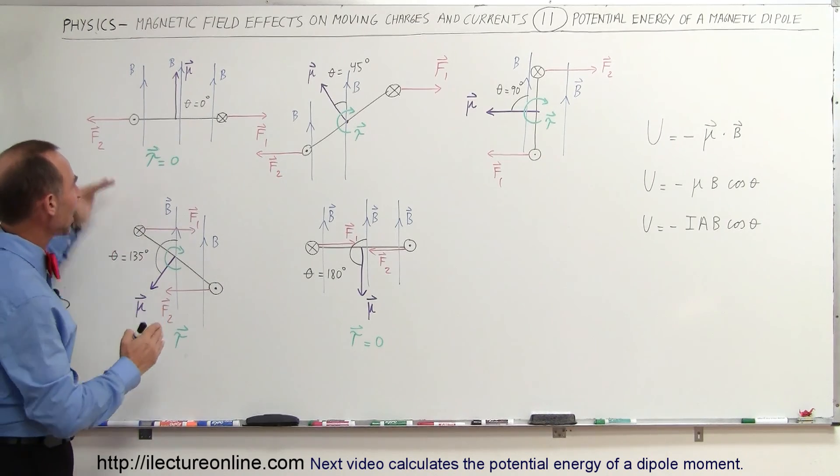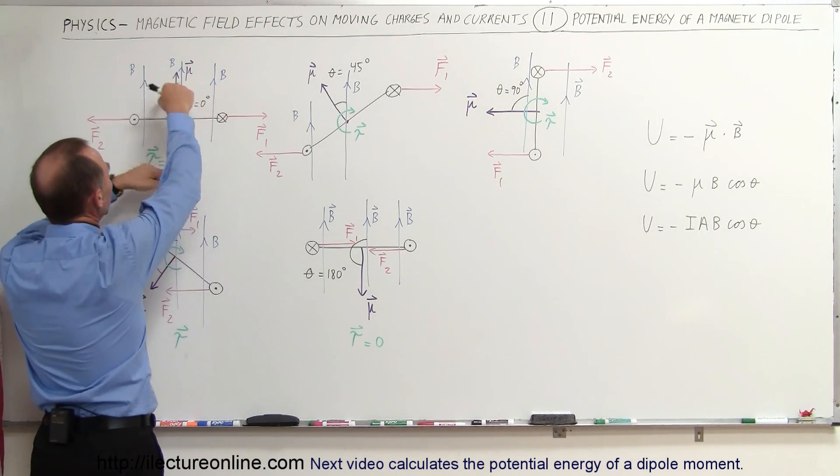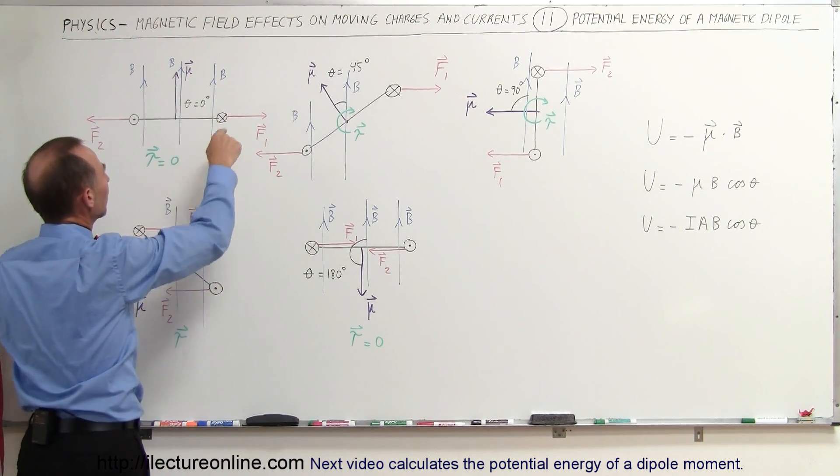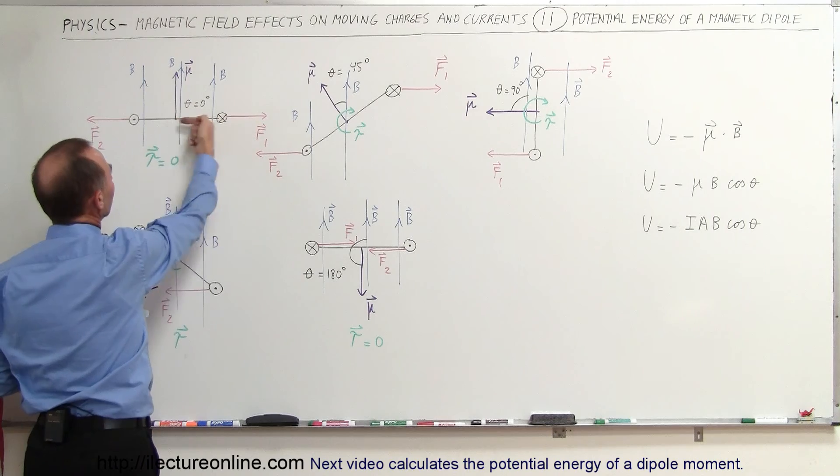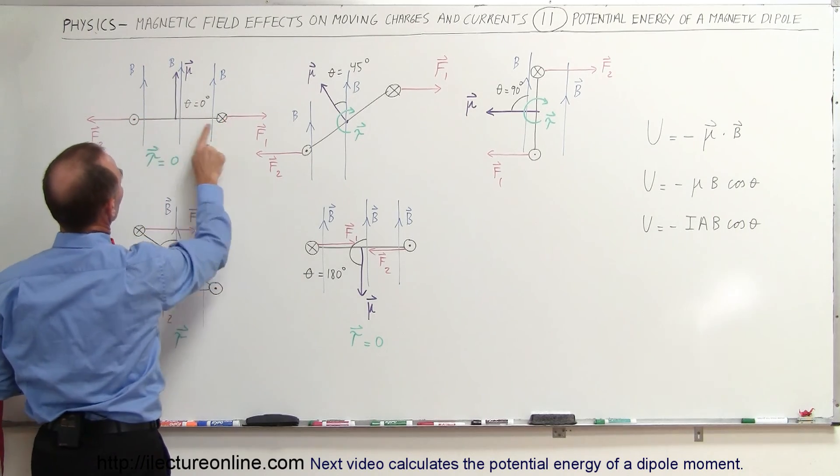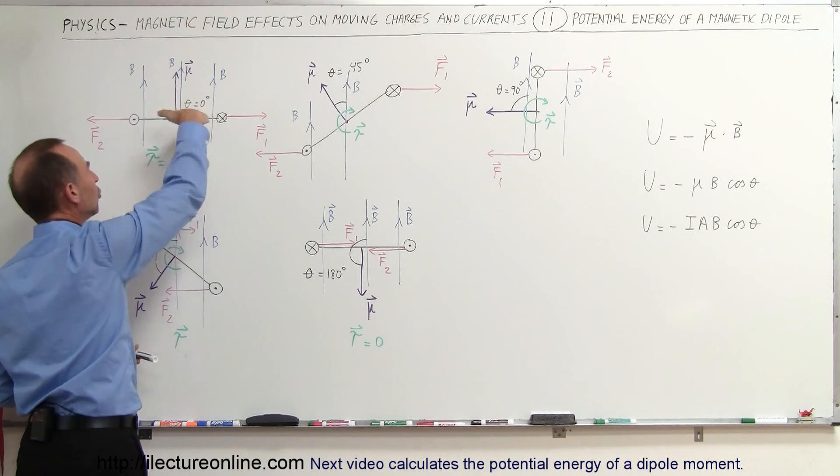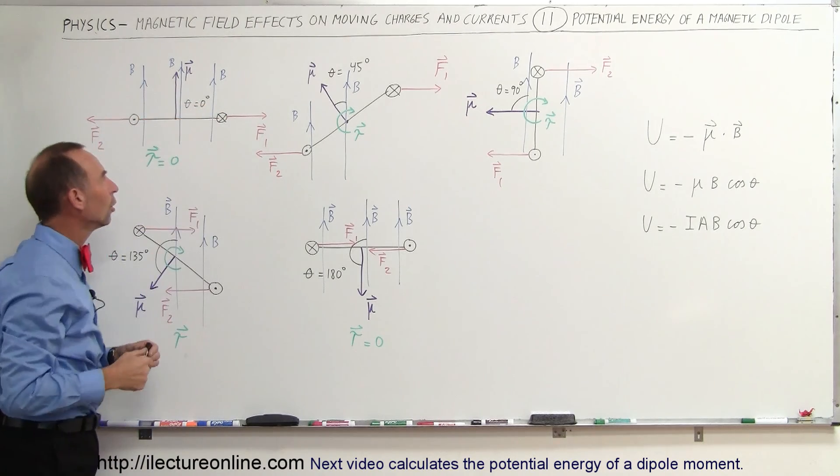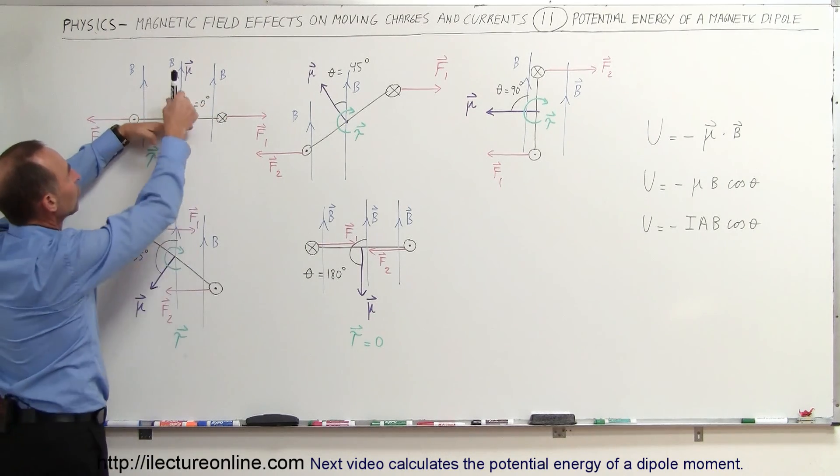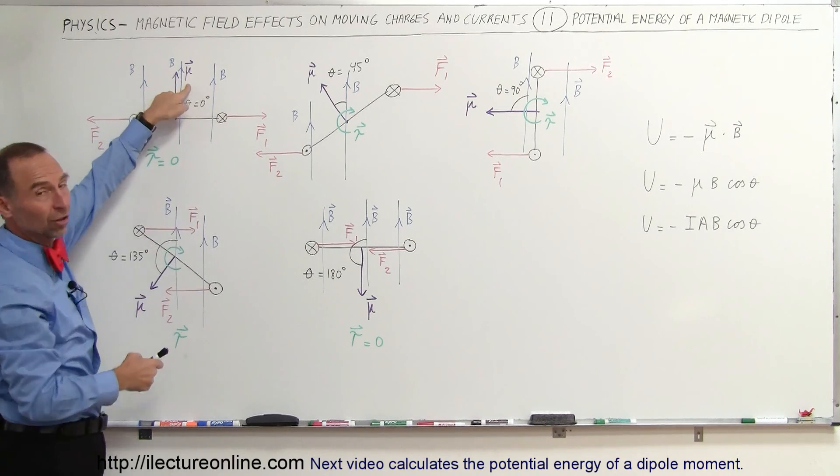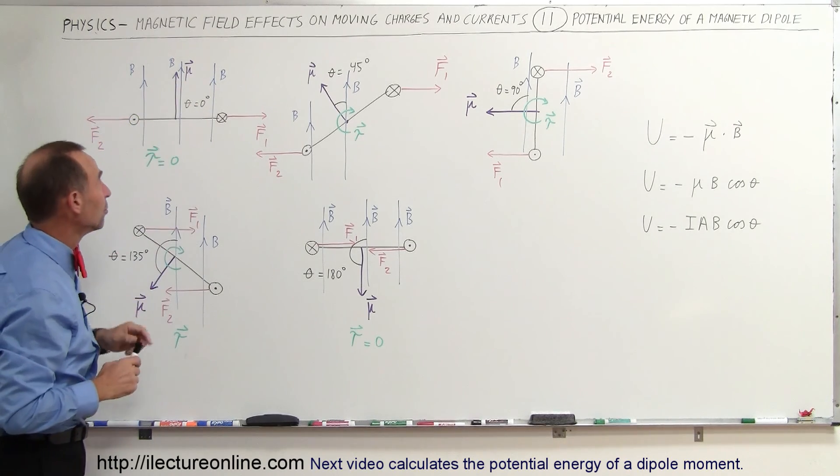So imagine that we have a plane right there. We have a loop that is able to turn around in the plane. So here we have the current going into the board, this way coming out of the board. So the loop is in this direction, it's perpendicular to the plane of the board. Notice that the normal to the loop is up, and that would also be the direction of the magnetic dipole moment, mu.